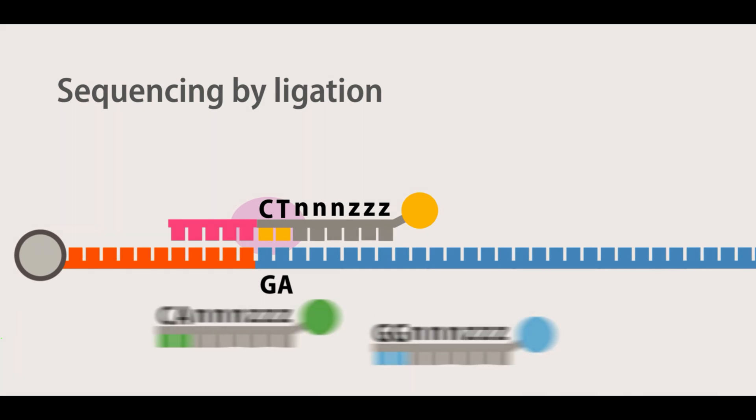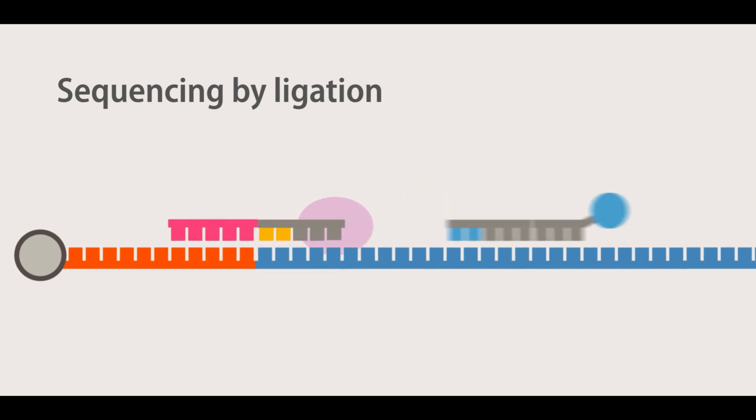Unbound oligonucleotides are washed away. The signal is detected and recorded. After that, the fluorescent signal, along with the last three bases of the eight-mer probe, are cleaved, and then the next cycle commences.